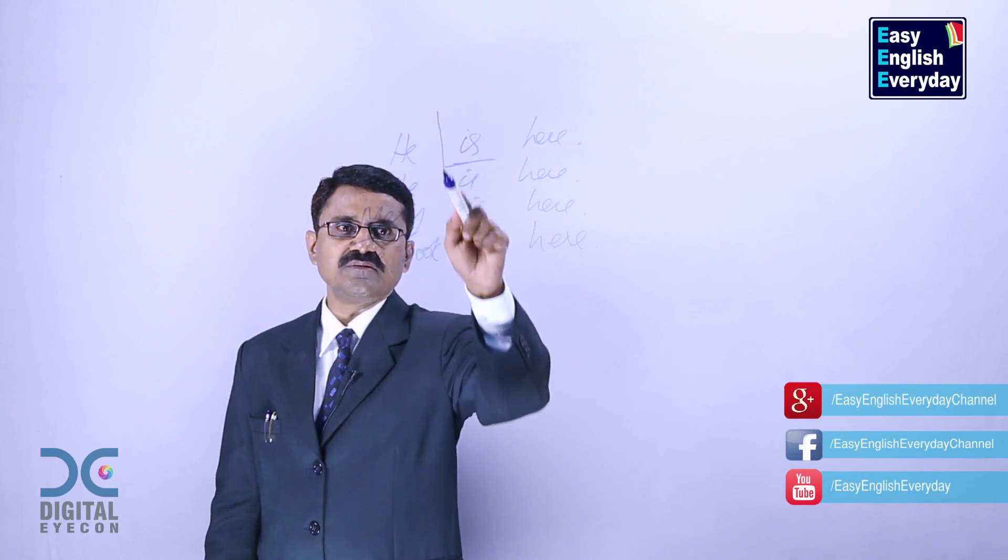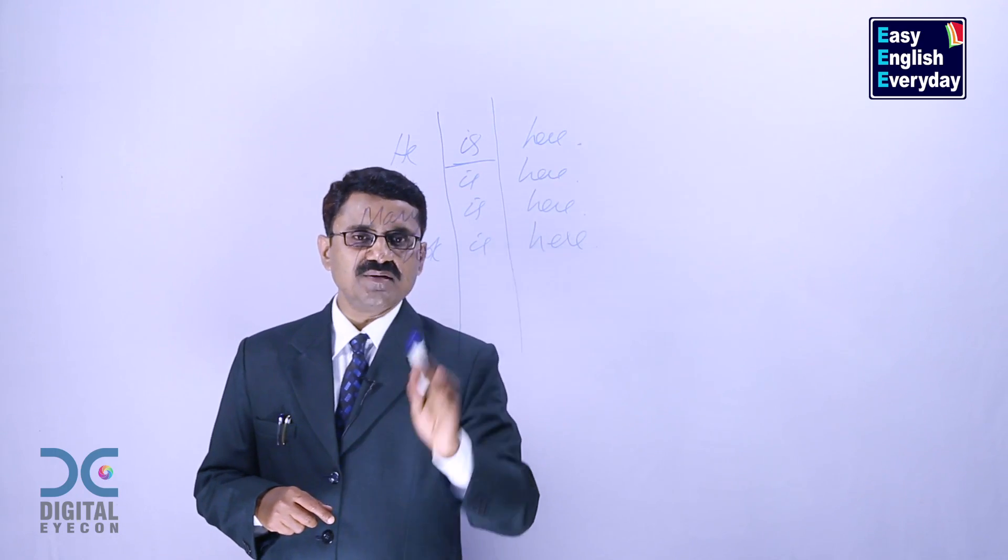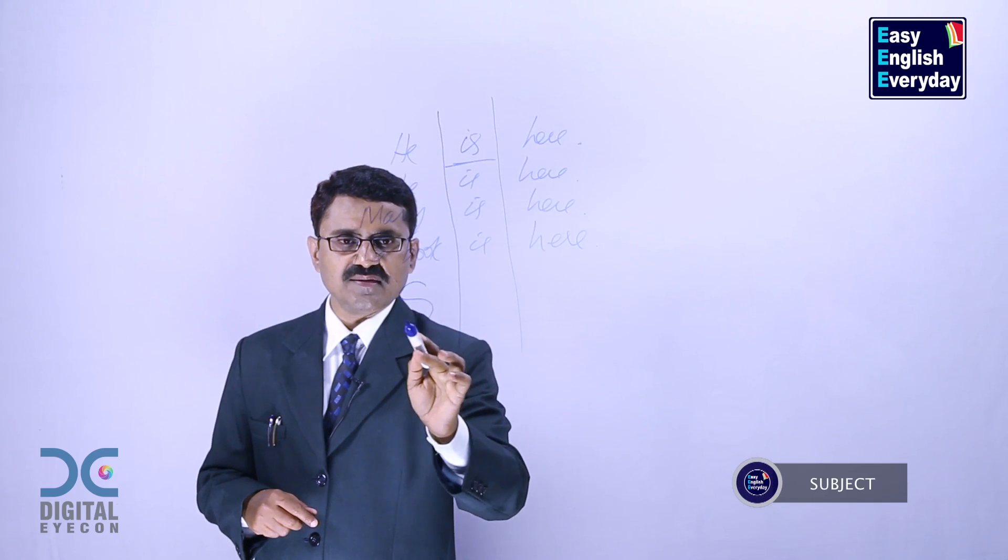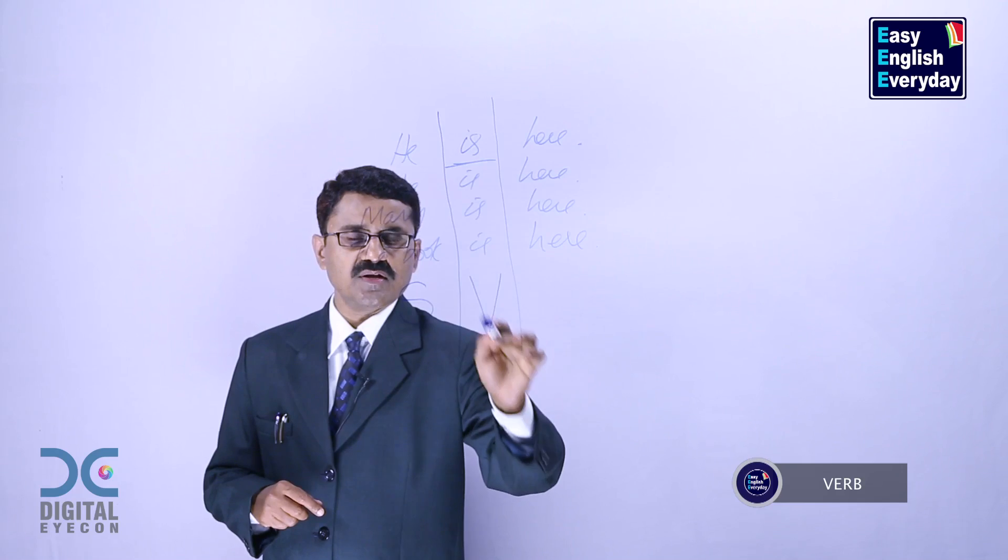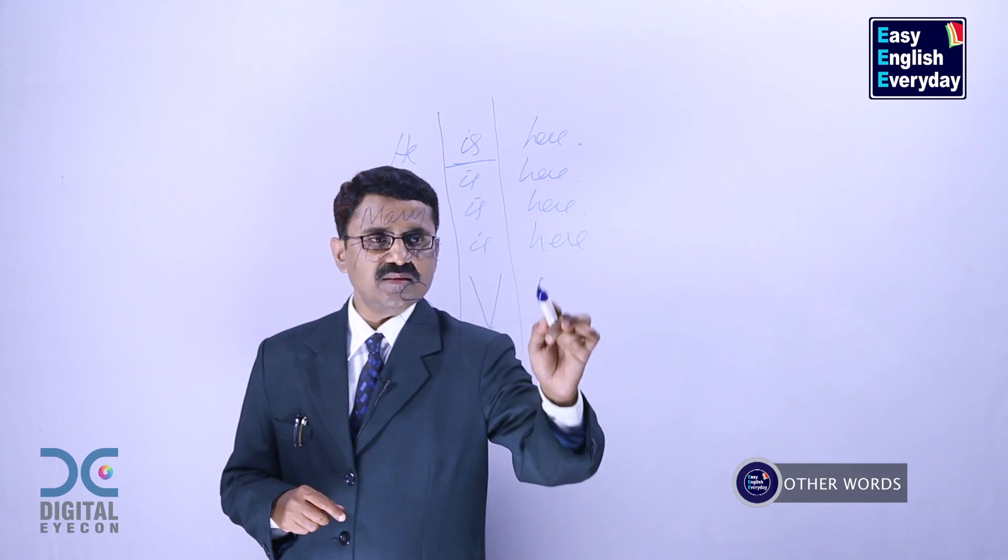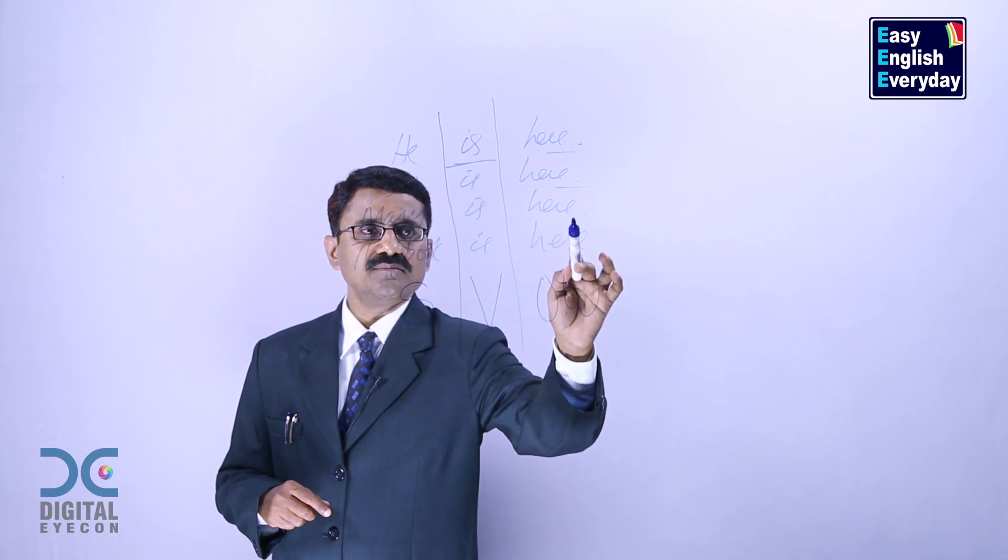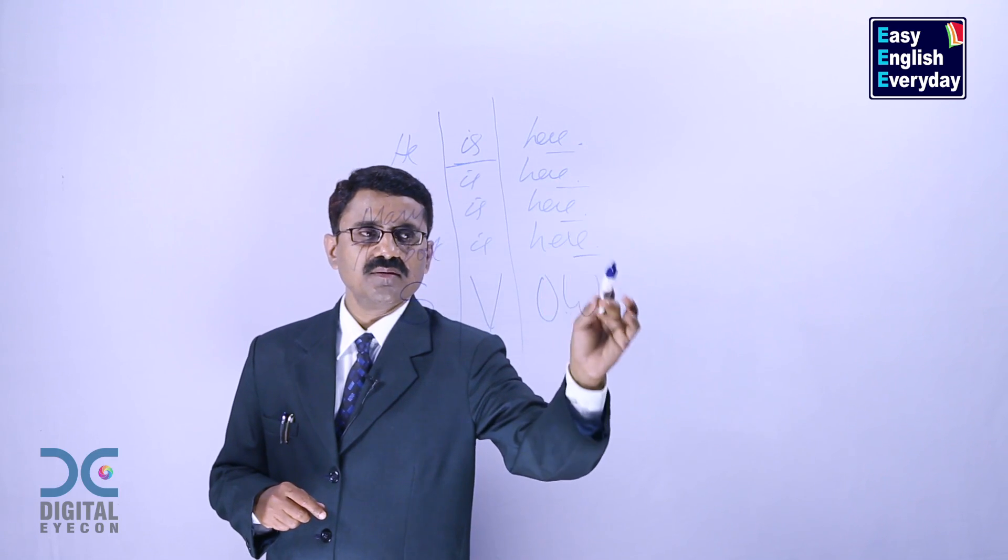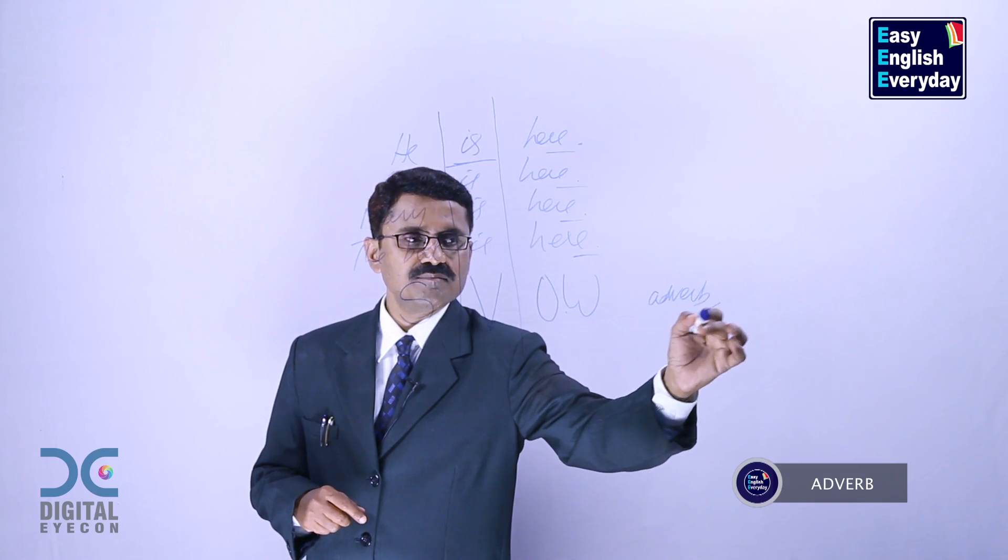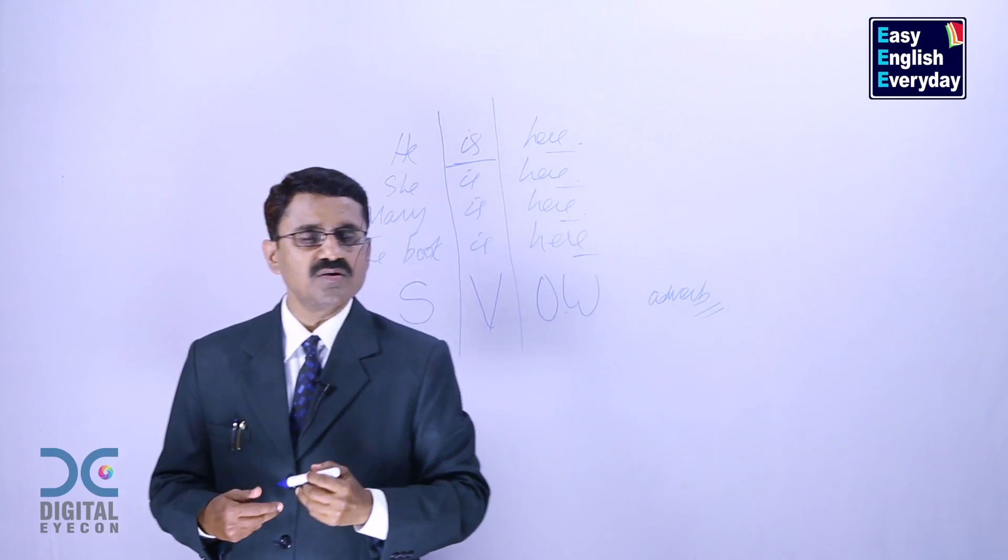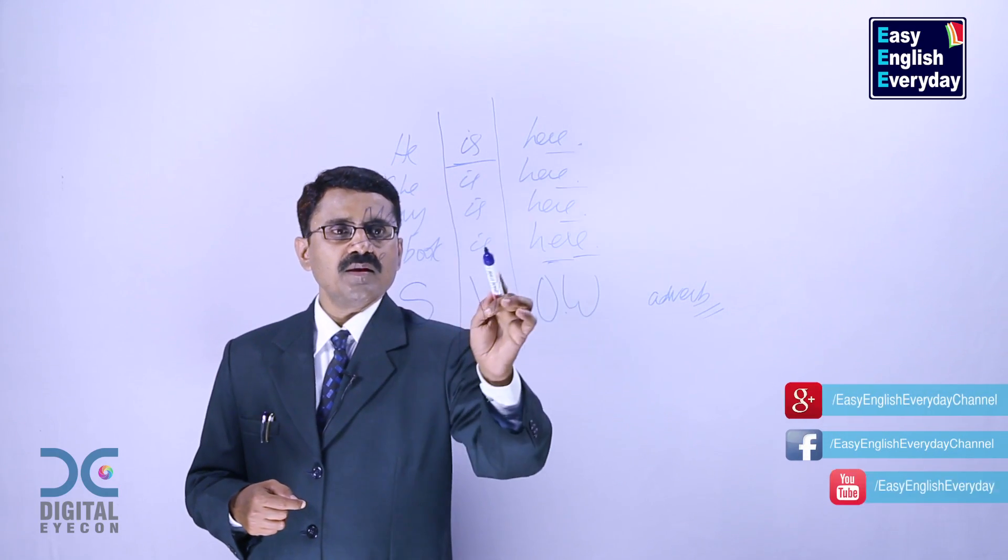Let us analyze these sentences. If you divide these sentences into three parts, this part of the sentence is called subject, and this is called verb, and this is called other words category. Here, here, here, here. Grammar calls it adverb. It is a word in English language.